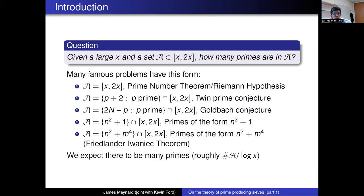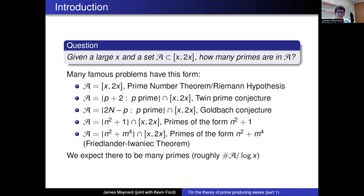Those three examples — the twin prime conjecture, Goldbach's conjecture, and primes of the form n^2 + 1 — are three of the four Landau problems proposed over 100 years ago, and all feel pretty out of reach. One particular success in this area is the Friedlander–Iwaniec theorem, proving there are infinitely many primes of the form n^2 + m^4, by showing an asymptotic formula for primes of that form of size about x. One common theme is that we expect there to be lots of primes in all these situations.